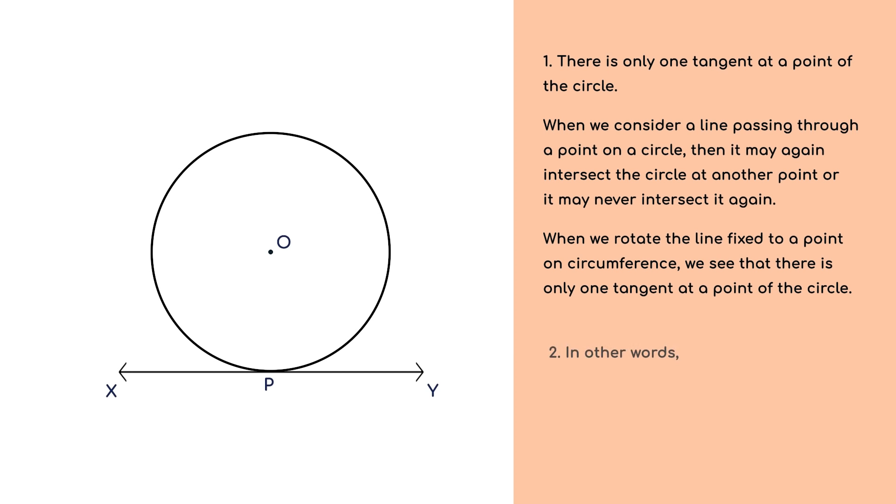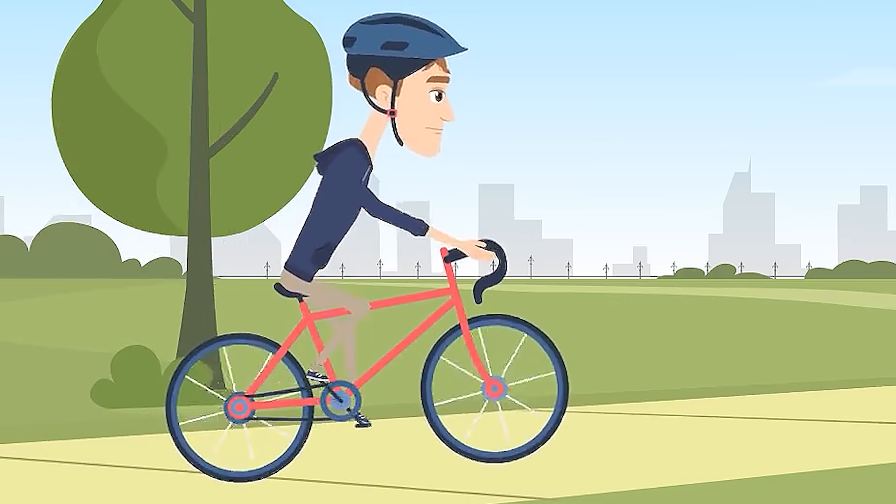2. In other words, the tangent to a circle is a special case of the secant, when the two end points of its corresponding chord coincide. The common point of the tangent and the circle is called the point of contact and the tangent is said to touch the circle at the common point.